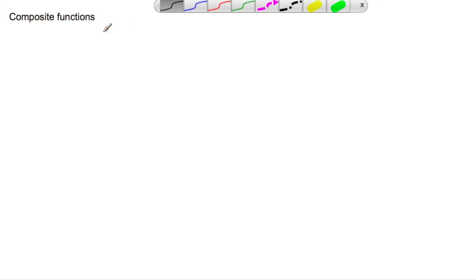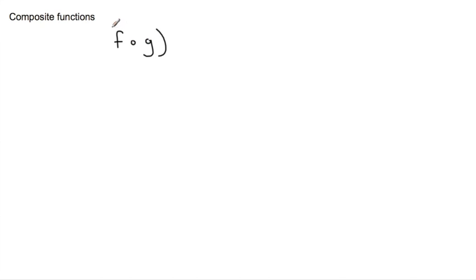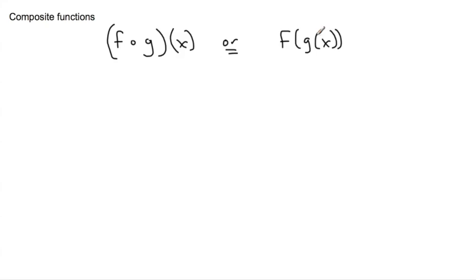For composite functions, this is some sort of rule where instead of feeding something an x, you feed it an equation. That might seem a little bit weird. Here is the notation: this is f with a little circle g of x — it looks like fog but it isn't. More commonly you'll see it written as f of g of x. We're taking an f of x function, but instead of feeding it just an x value, we're feeding it an equation.